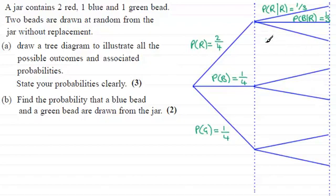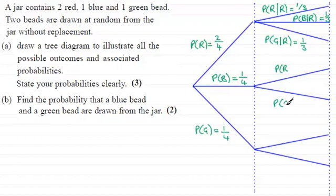For the probability of a green bead given I previously took a red bead, that's one green bead out of three beads — again one third. Adding all three gives three thirds, one whole. For the case where we took a blue bead first, we could go on to take either a red or a green. The probability of red given I previously took a blue — there are two reds in the jar out of three — so that's two thirds. That means the probability of green given blue is one third. Two thirds plus one third makes one whole.